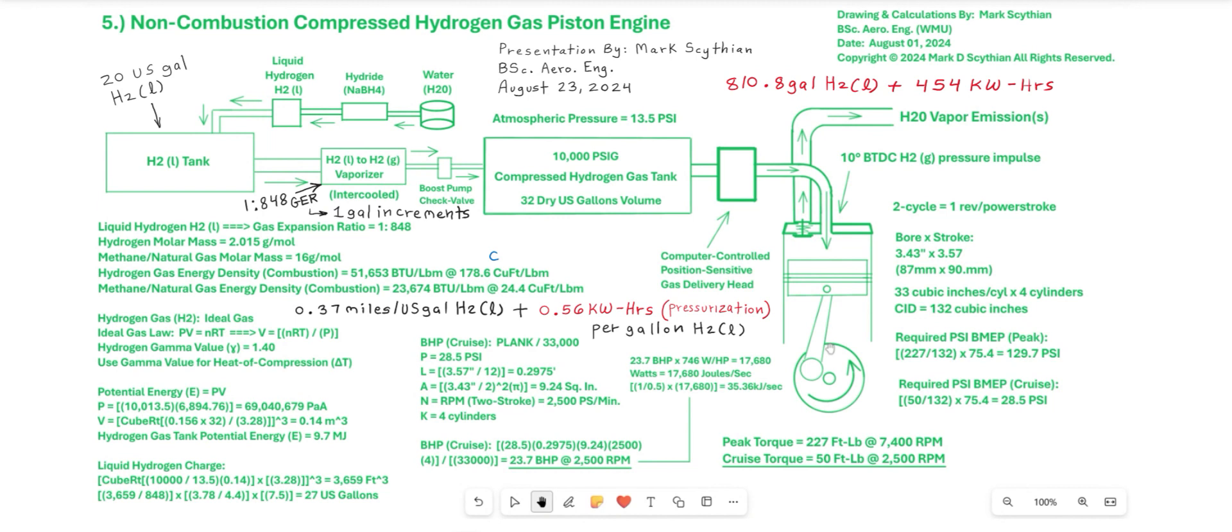And so if we were going approximately 70 miles per hour on the highway with this sort of engine, this would translate to approximately 300 divided into 70 miles per hour so 4.3 hours. And so if we scale down the kilowatt hours to a factor of 4 versus 1 then it comes down to 113.5 kilowatt hours plus 811 gallons of liquid hydrogen.